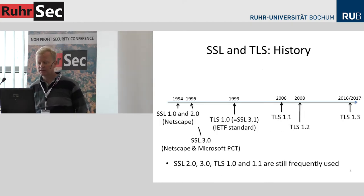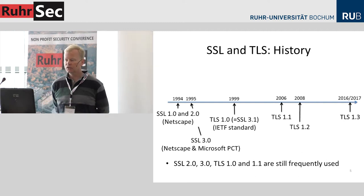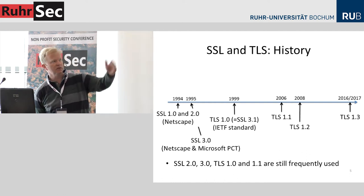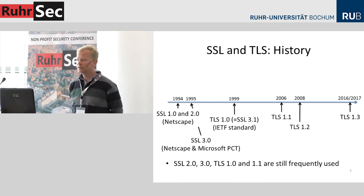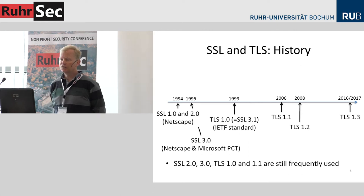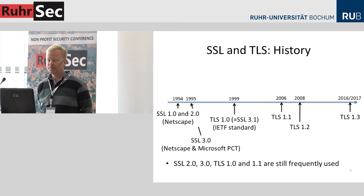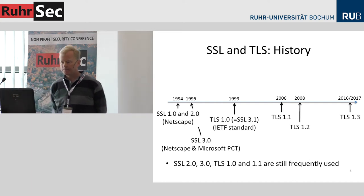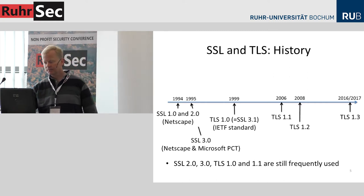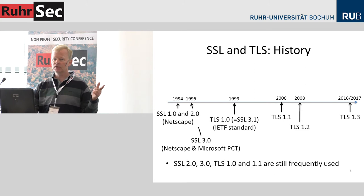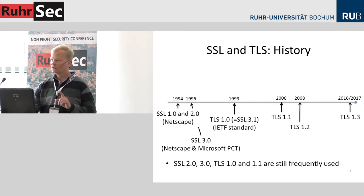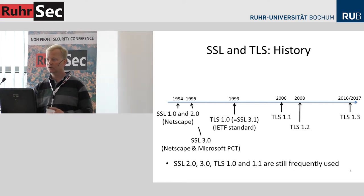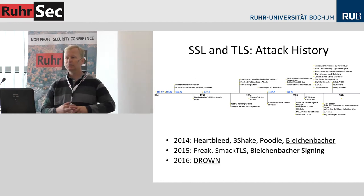Looking at the history of SSL/TLS, there are gaps where nothing happened in standardization and periods of activity. Most activity was around 2006 and 2008, when two new versions appeared — really minor updates since attacks were still scarce. The old versions are still frequently used. In the case of SSL 2.0, it was surprising to learn from the Drown paper how heavily it's still used, because this version has known security issues and should have been deactivated long ago.